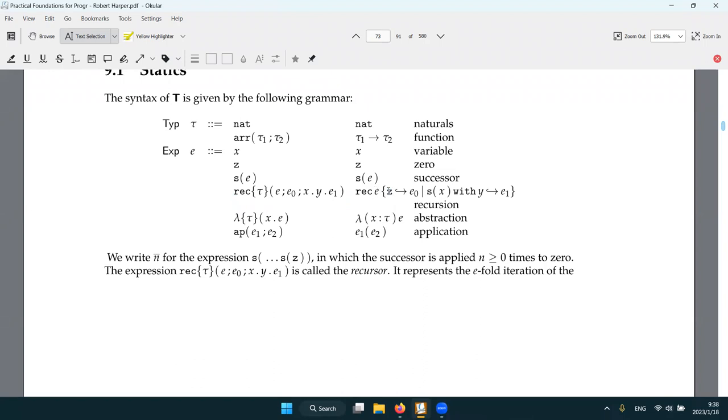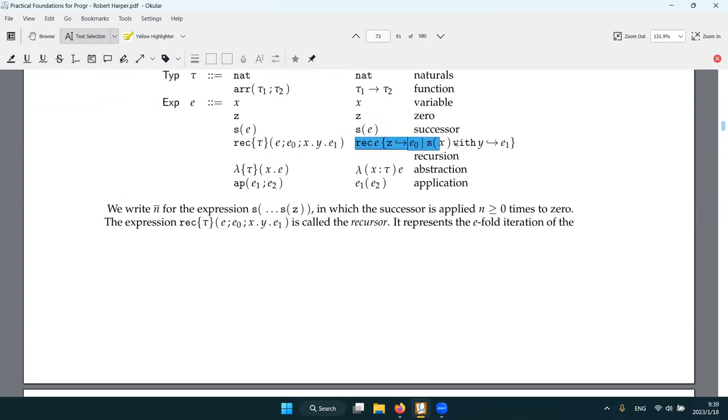We basically do a pattern matching on E and say, if E is zero, then we get E zero. If E is some successor of X, then we recursively do this primitive recursion, get a result Y, and with that we get E one. So inside E one, we can refer to X and Y. That's why they use the notation like this. I guess it's particularly this Y. It's a little bit hard to wrap around to understand what it means.